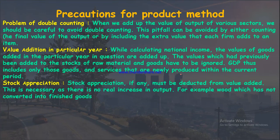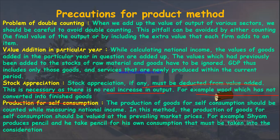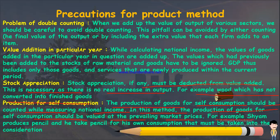The third precaution is stock appreciation, which must be deducted from value added — otherwise there is no real increase in output. For example, wood which has not been converted into finished goods should not be added to national income because no actual output has been produced. The fourth precaution is production for self-consumption: goods produced for self-consumption should be counted while measuring national income and valued at the prevailing market price.